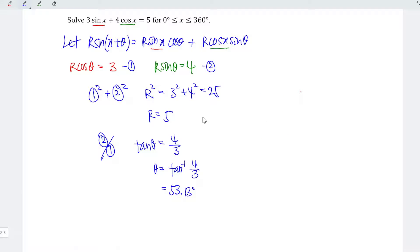With the values of r and theta, we can now substitute into the equation that we denoted, which means that we have 5 sin(x + 53.13 degrees), and this is equal to 5.